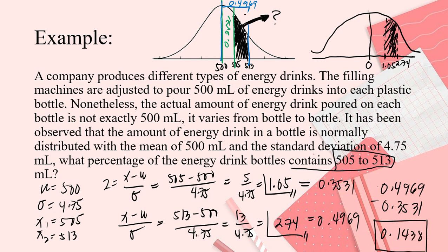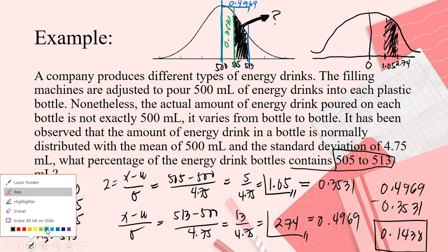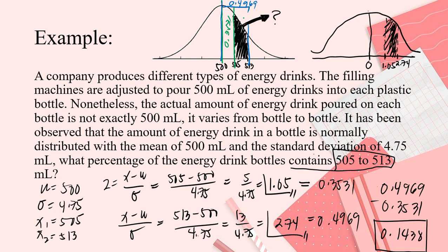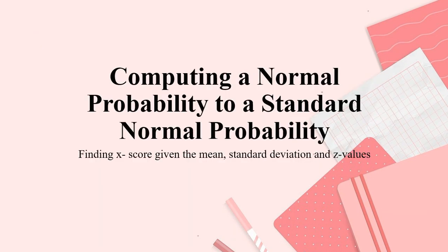So, that means, let's label with color, different color so we won't get confused. This part is 0.1438. Because if you add 0.3531 and 0.1438 the answer is 0.4969. So, your final answer now is, and the final answer if it is in percentage 14.38%. That will be your final answer.